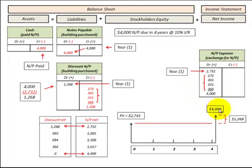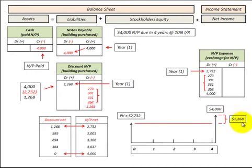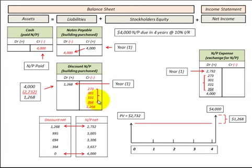In review: we had a $4,000 payment due at the end of the fourth year. We discounted that back to its present value at the beginning of year one using our interest rate — in this case 10%. We then took the difference between the future value payment and its present value, and that amount of $1,268 we allocated to interest expense. After adding interest to the present value, we end up with the $4,000 of notes payable due in the fourth year. We kept everything in balance using the discount account, which is a contra account to notes payable. That's how we represent notes payable at its present value on the balance sheet, and how we use that discount on notes payable to keep everything in balance.